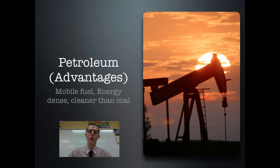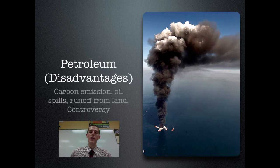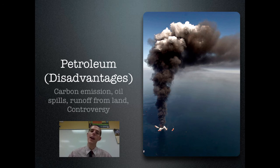Petroleum's advantages: it's a mobile fuel — refined into gasoline or diesel, put in a tank, and go — something you can't do with coal or easily with natural gas. It's very energy-dense and burns more cleanly than coal, releasing less pollution and less carbon dioxide. For disadvantages: the biggest CO2 emitters globally are from transportation, i.e., burning petroleum as gasoline. And then there are oil spills — notably the Deepwater Horizon in the Gulf of Mexico in 2010, and the Exxon Valdez in Alaska in 1989.